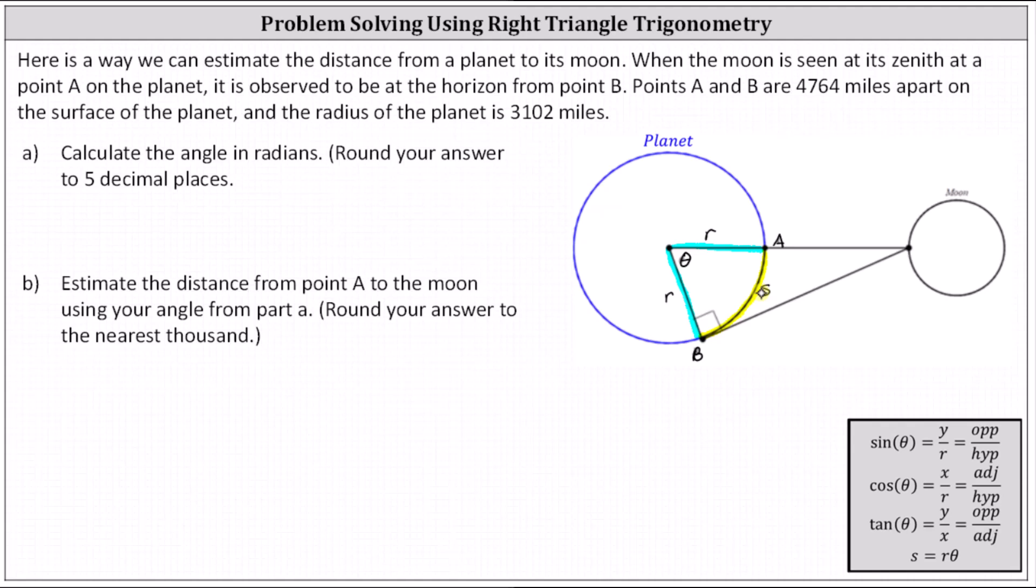Part A, calculate the angle theta in radians. We can determine theta using the arc length formula s equals r theta. We know s, the arc length, is 4,764 miles, and we know the radius r is 3,102 miles,